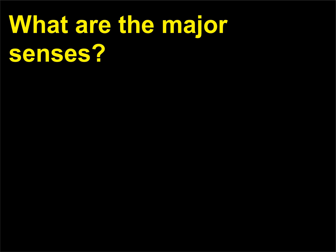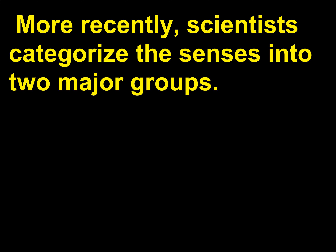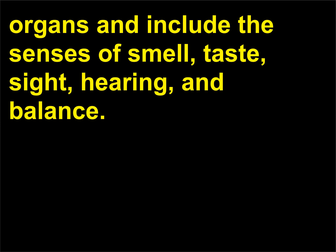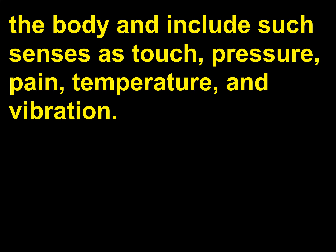What are the major senses? As early as 300 BC, the five senses were recognized to include smell, taste, sight, hearing, and touch. More recently, scientists categorize the senses into two major groups. One group is the special senses, which are produced by highly localized sensory organs and include the senses of smell, taste, sight, hearing, and balance. The other group is the general senses, which are more widely distributed throughout the body and include such senses as touch, pressure, pain, temperature, and vibration.